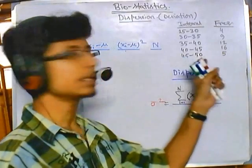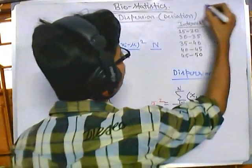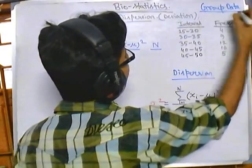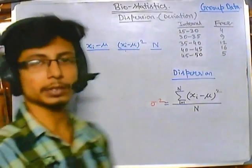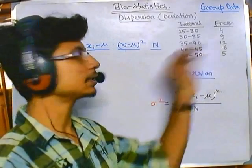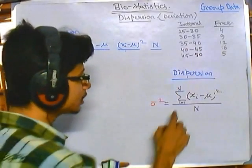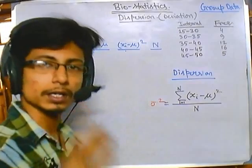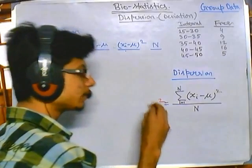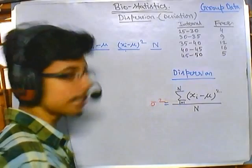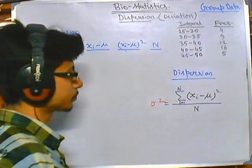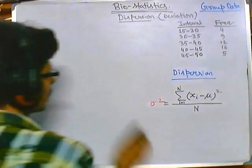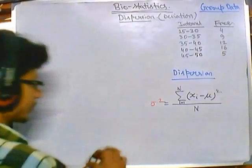Now we want to solve this for frequency group data. Group data is most difficult to deal with, so we need to be very careful handling it. The previous formula was for non-frequency data, so there must be a change in the formula for group data.